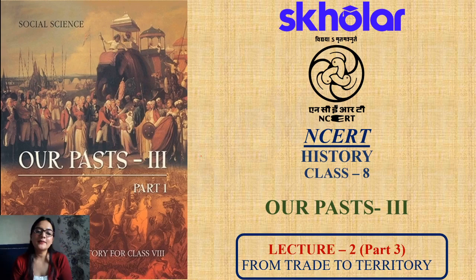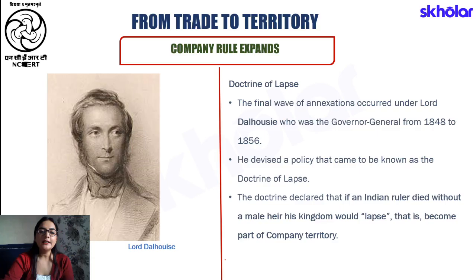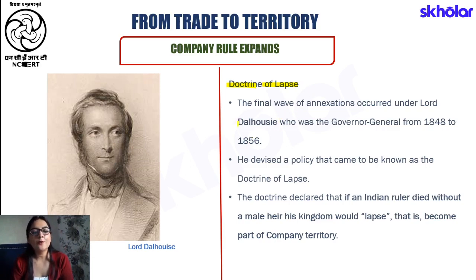This particular lecture is also in continuation to Chapter 2 — 'From Trade to Territory' — wherein we are now going to talk about another important instrument of accession, that is the Doctrine of Lapse. This Doctrine of Lapse was put forward by Lord Dalhousie, who had served as the Governor General from 1848 to 1856.